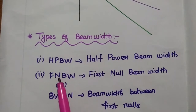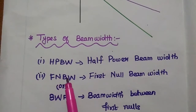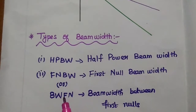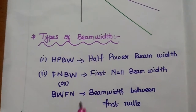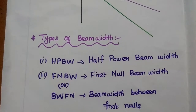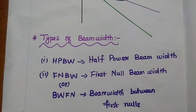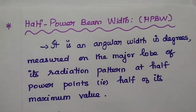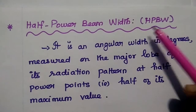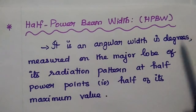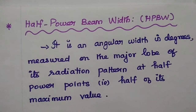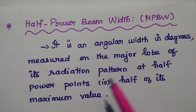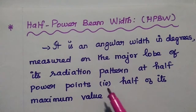The second type is first null beam width, represented as FNBW. It can also be called as beam width between first nulls. So there are two types of beam widths available in antenna. Let us discuss one by one in detail.